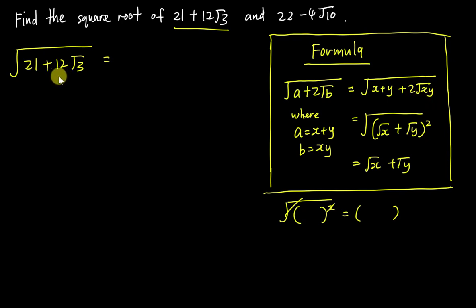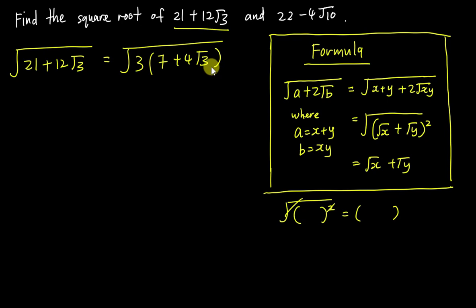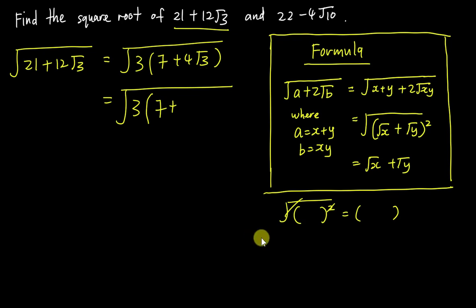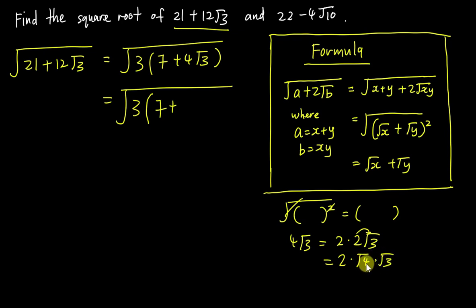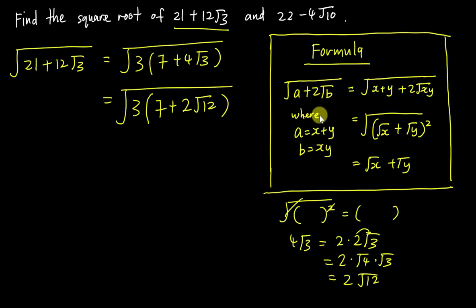You'll notice that 12 is not 2, so I try to make the number look smaller by factorizing out the 3. This gives 7 + 4√3. This is still not yet in the form 2√b, so one more step: 4√3 means 2 × 2 × √3. Since 2 = √4, I can write 2√3 as √4 × √3 = √12. So this becomes 7 + 2√12, which matches our pattern.